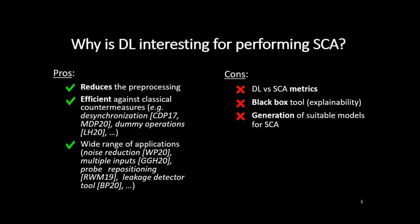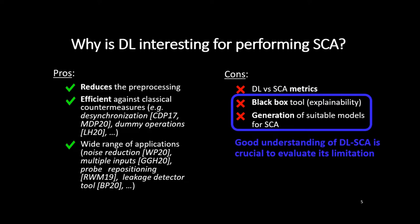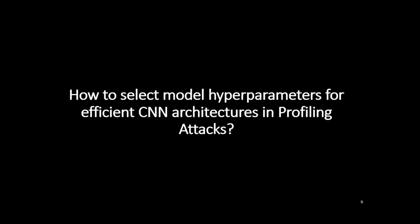Typically, the network architectures used in side-channel analysis are based on image classification problems like VGG16. Through our paper, we want to understand the impact of some parameters that compose the convolutional part of a CNN and propose a new approach to generate more suitable architectures in deep learning-based side-channel analysis. Our research question is: how to select model hyperparameters for efficient CNN architectures in profiling attacks?